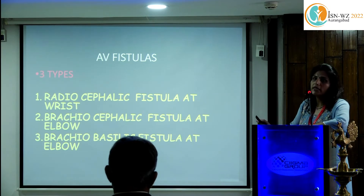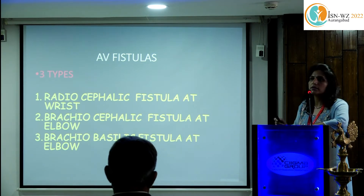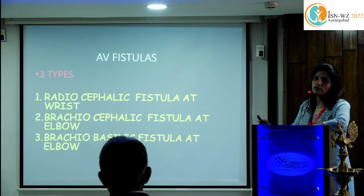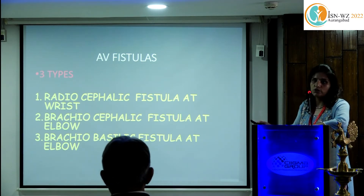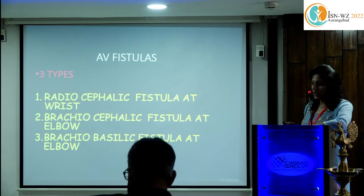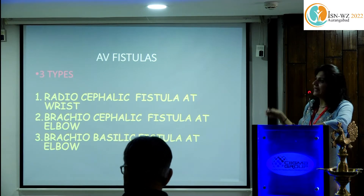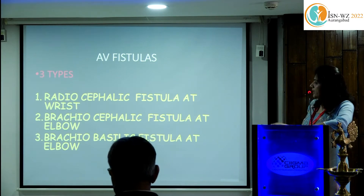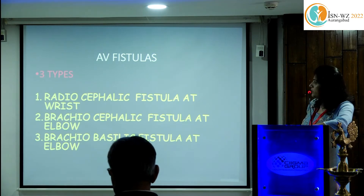The third option is a brachio-basilic fistula. The basilic vein is very deep, so a two-step procedure is required once the fistula is constructed. Superficialization of the basilic vein is required for cannulation because the basilic vein in its course is deeper — we won't be able to cannulate it for hemodialysis. Hence this is the last option.